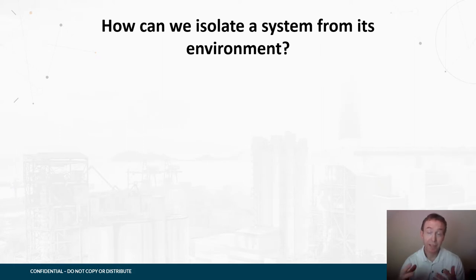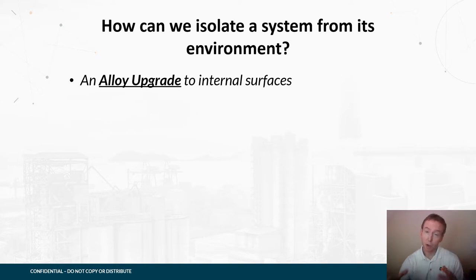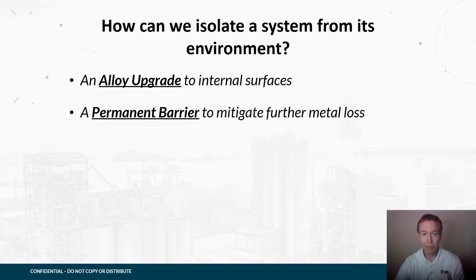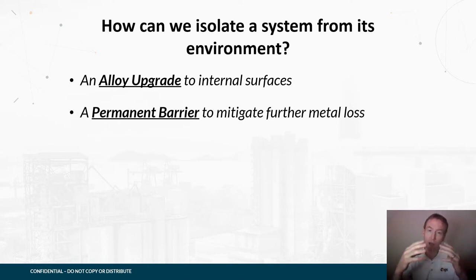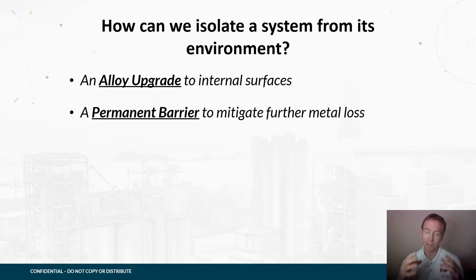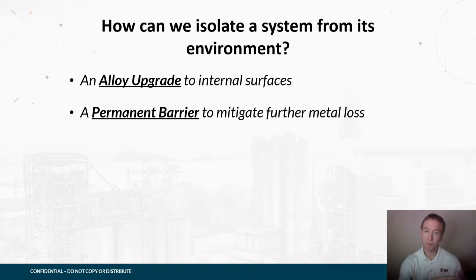How do we isolate the internal surfaces of equipment from this process environment? One thing we can do is upgrade the internal metallurgy or the surface metallurgy inside the unit. If we install an alloy upgrade that will provide a permanent barrier to prevent further metal loss — we install a high-nobility alloy onto the surface of the carbon steel. That high-nobility alloy is inert to the environment, non-reactive, and it will not corrode, preventing the underlying substrate from being in contact with the corrosion mechanisms, isolating the carbon steel from any further corrosion activity.